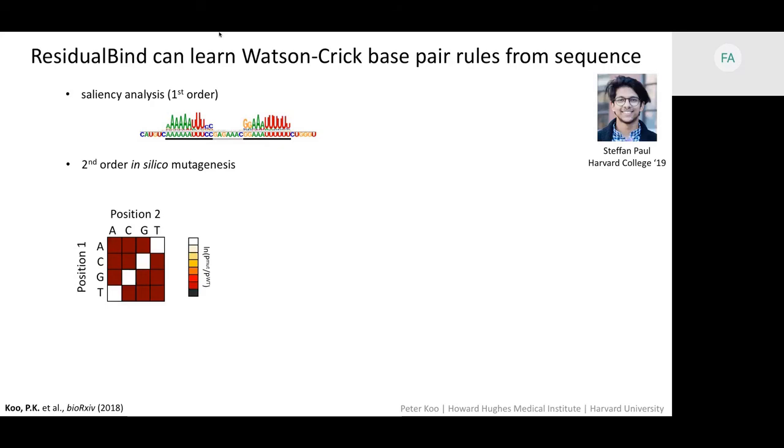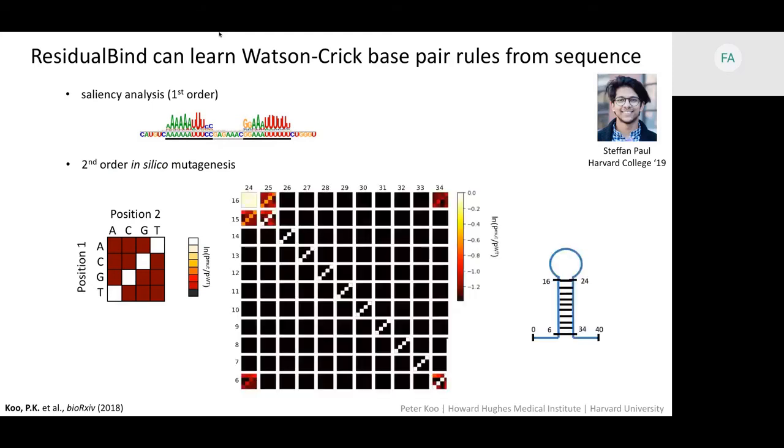Now, if these two positions should be directly base paired, then we'd imagine that complementary nucleotides shouldn't change the predictions. Whereas if the nucleotides would break a hairpin loop, then we'd expect the predictions to decrease. And that's represented as this pattern here.